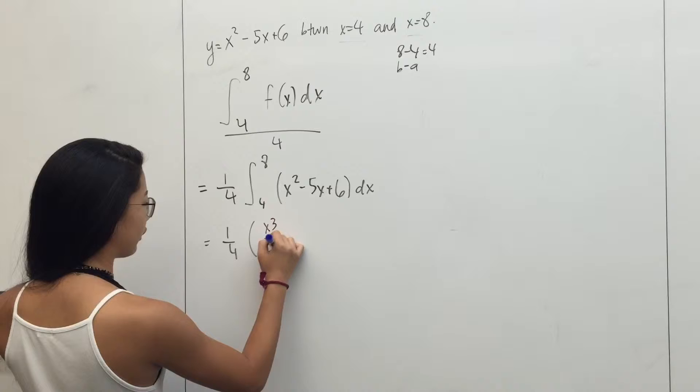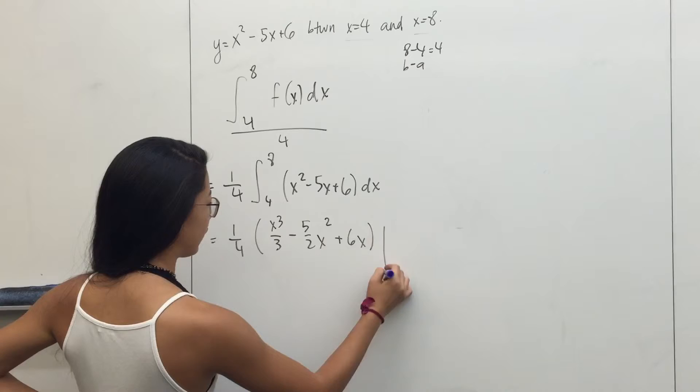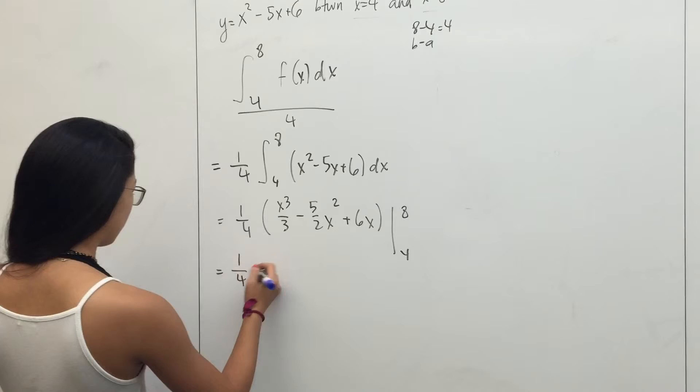Take the antiderivative, that will be x cubed over 3 minus 5 over 2x squared plus 6x. We're going to evaluate that from 4 to 8.